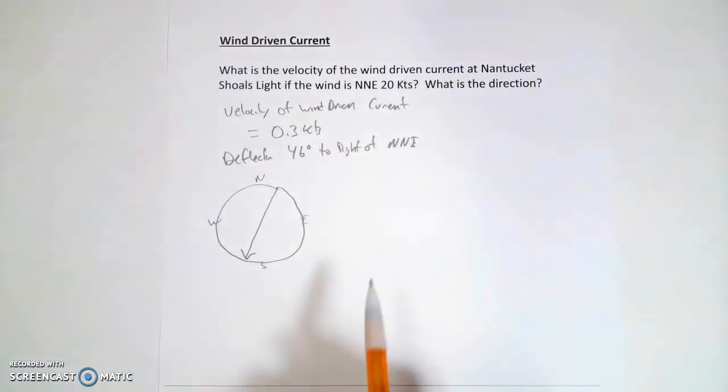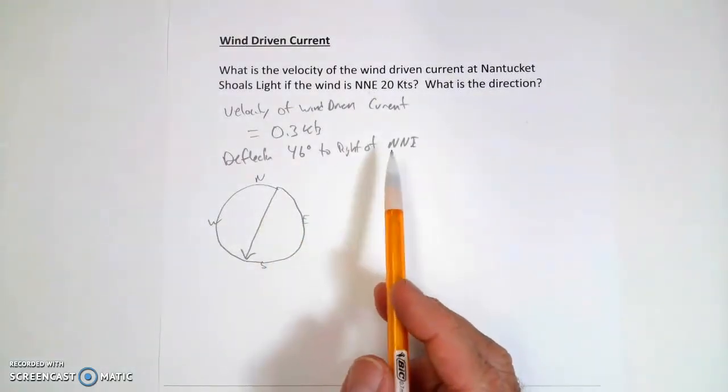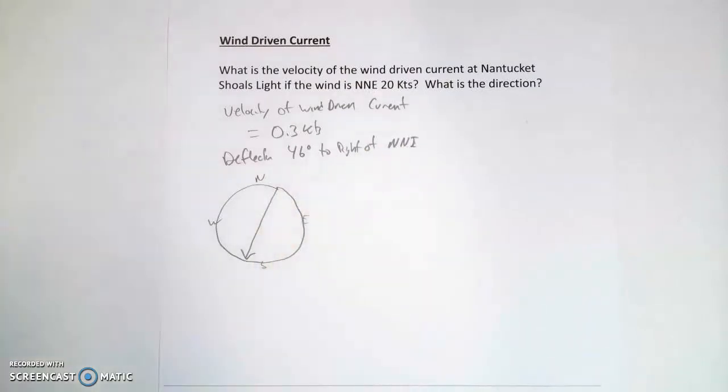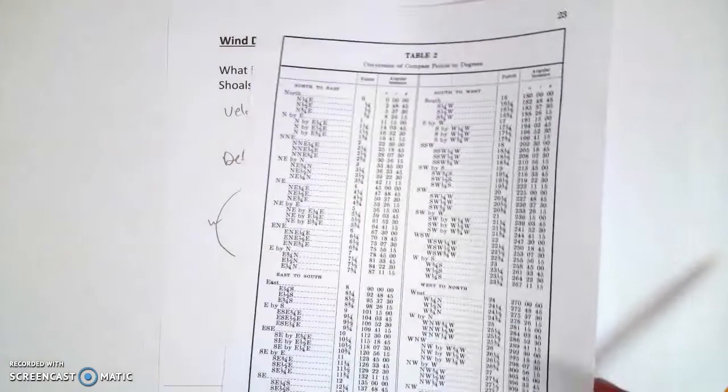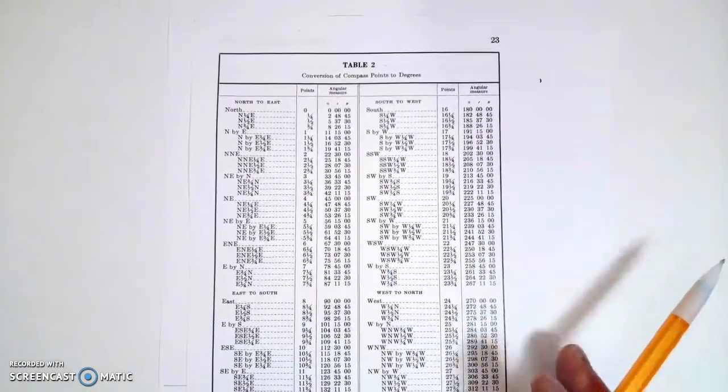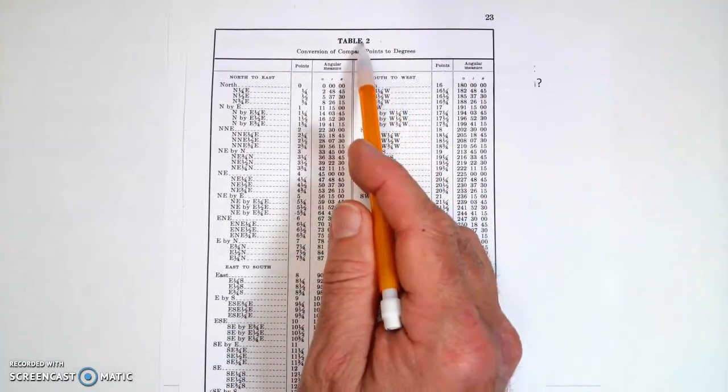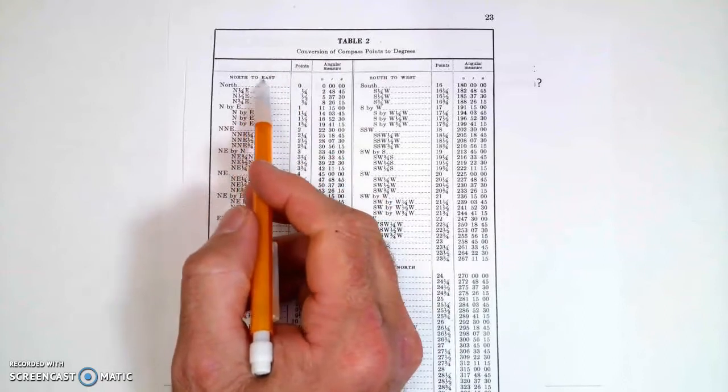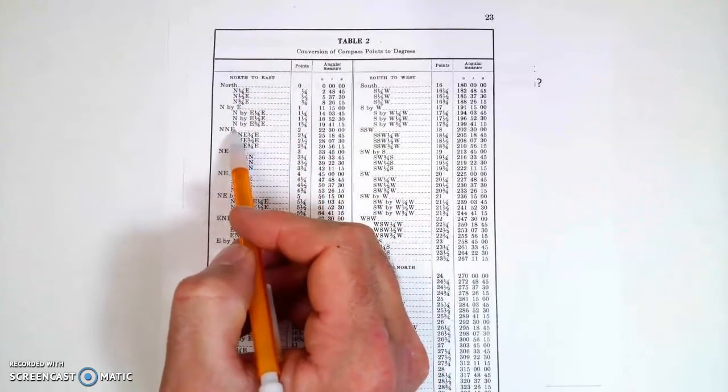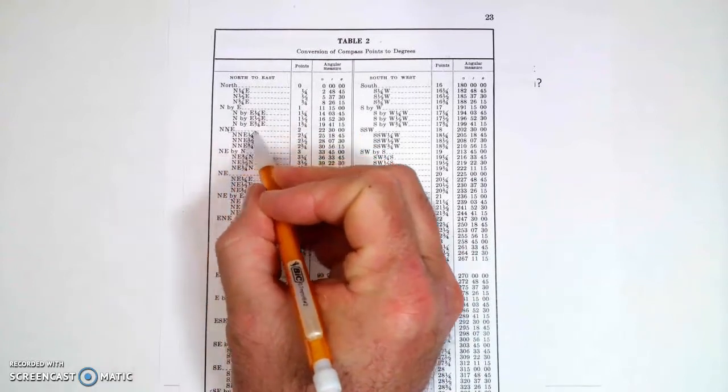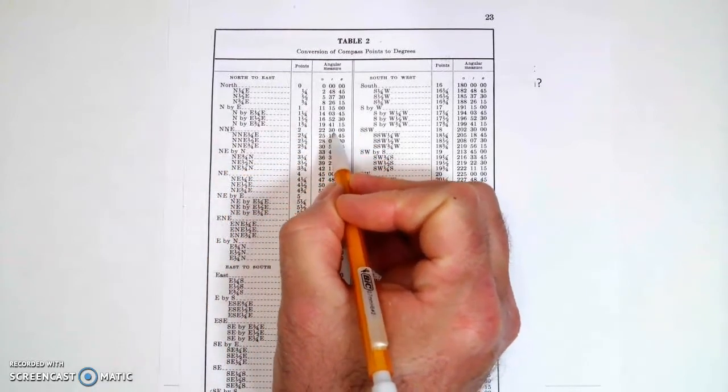So first thing I need to do is I need to convert north-northeast from a point to degrees. So in order to do that, I'm going to go to Bowditch, and it turns out that if you go into Bowditch 1981, there's going to be this table, table 2. So I just have a photocopy of that particular page, but here is the wind in points, and here is the angular measure in degrees. So north-northeast is 22 degrees 30 minutes, that's basically 22 and a half degrees.